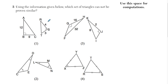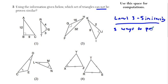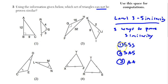Question number five. Using the information given below, which set of triangles cannot be proven similar? Well, remember, this is level three, similarity. And there's three ways that we know how to prove similarity. Number one way is side, side, side similarity. Number two way is side, angle, side similarity. And number three way is angle, angle, similarity. So, those are the three ways we can prove it.